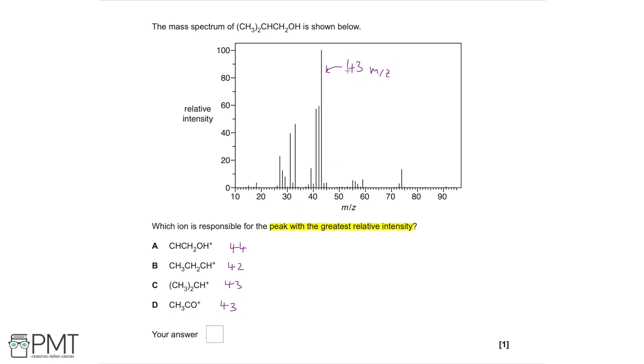So we know that the m over z is 43. We can eliminate A and B since they don't have the correct m over z value. We've got a charge of one, a formula mass of 42 and 44. So their m over z would be 44 and 42 respectively for A and B. We're left with C and D, which both have this value of 43.